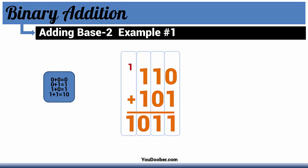So 1, 1, 0 plus 1, 0, 1 equals 1, 0, 1, 1, according to our table.